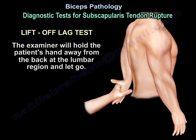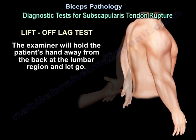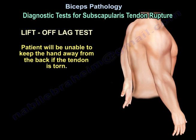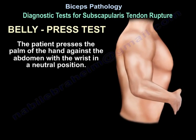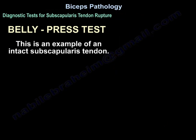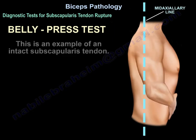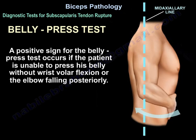The lift-off lag test: the examiner holds the patient's hand away from the back of the lumbar region and lets go. The patient will be unable to keep the hand away from the back if the tendon is torn. The belly press test: the patient presses the palm of the hand against the abdomen with the wrist in a neutral position. A positive sign occurs if the patient is unable to press the belly without wrist volar flexion or without the elbow falling posteriorly.